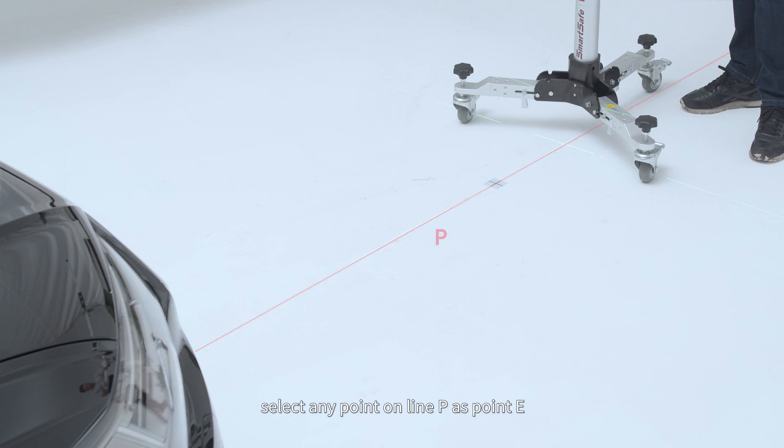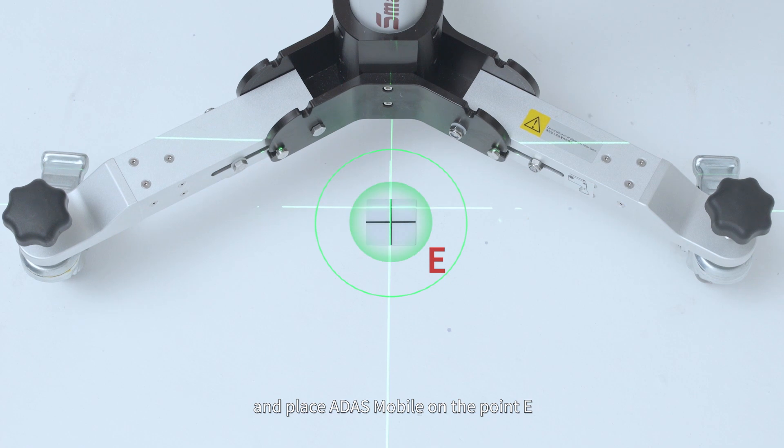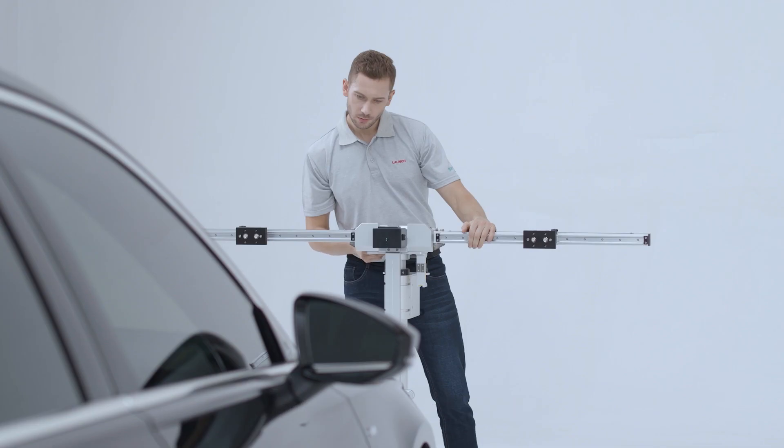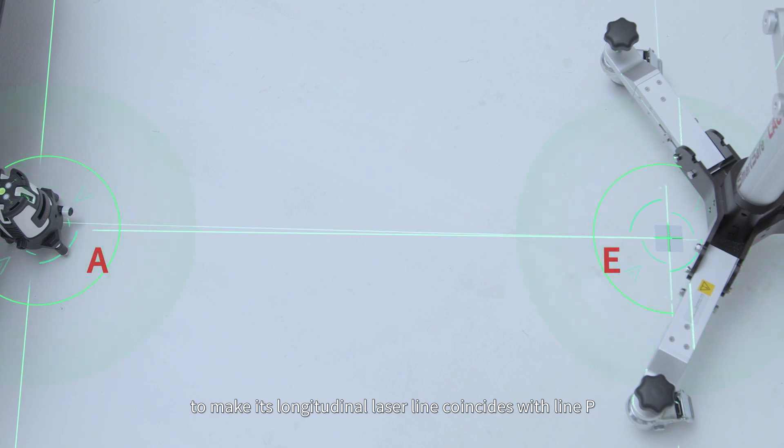Select any point on line P as point E and place ADAS Mobile on the point E. Fine-tuning the ADAS Mobile to make its longitudinal laser line coincides with line P.